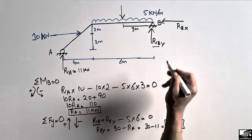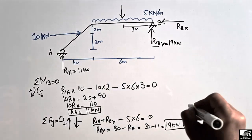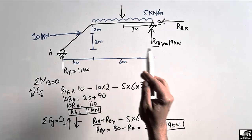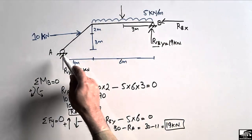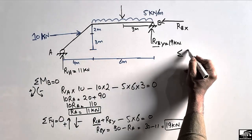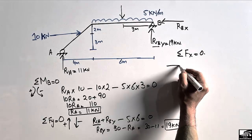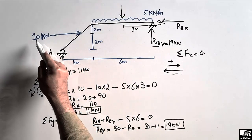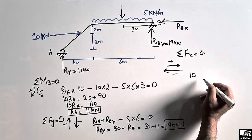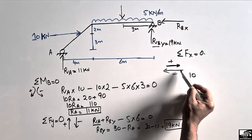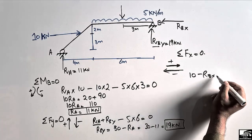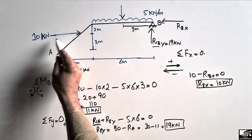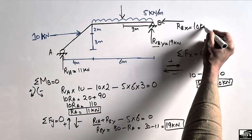This horizontal load will only be taken by the hinge support, since the roller support cannot resist horizontal load. Using summation of horizontal forces equal to zero: forces in the positive direction are taken as positive, and the 10 kilonewton lateral force acts in the positive direction. RBX acts in the opposite direction, so minus RBX equals zero, giving RBX equals 10 kilonewton.